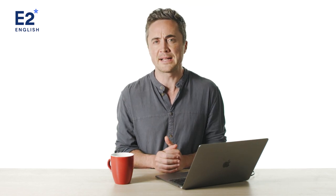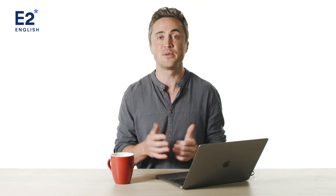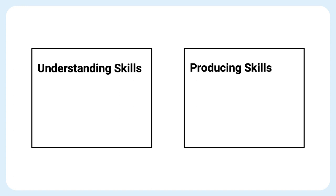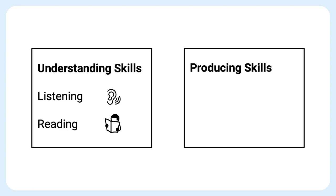Once you know your level, ask yourself which of the four skills do you want to improve. Do you just want to improve your speaking, or your speaking and listening — that is, do you want to become good at conversational English? Or do you want to improve your reading or maybe reading and writing — that is, do you want to improve your academic English? There are two things to keep in mind: you can put the four skills into two groups, called understanding skills and producing skills. The understanding skills include listening and reading, and the producing skills include speaking and writing.